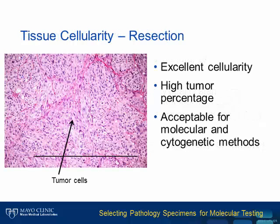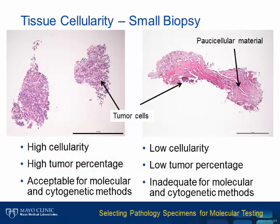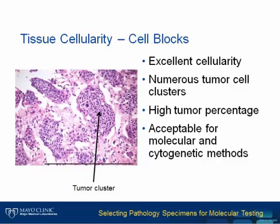Now let's move on to some examples. This resection tissue has fantastic tissue cellularity and a high tumor percent, so this is likely a specimen that would yield enough nucleic acid and would be acceptable for molecular and cytogenetic methods. When looking at small biopsies, it's not just the size of the tissue, but the cellularity and tumor percentage that matters. The biopsy on the left has high cellularity and high percent tumor nuclei and is likely acceptable for most molecular and cytogenetic methods, despite the fact that the tissue itself is rather small — only a couple millimeters. The biopsy on the right, however, while being similar in size, does not have many nuclei present within the tissue and even fewer tumor nuclei, so it would be inadequate for most cytogenetic and molecular methods.